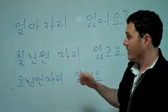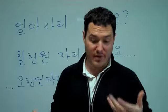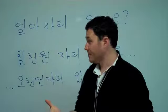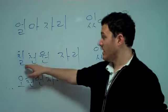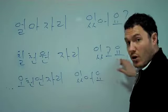얼마 자리 있어요. For example, they can answer, let's say they have one that's 7,000 won, and they have one that's 5,000 won. They can answer, 7,000원 자리 있고요.